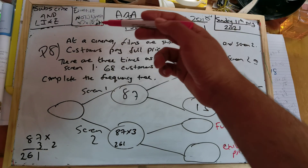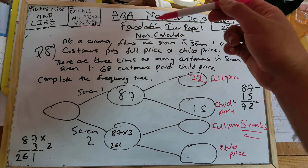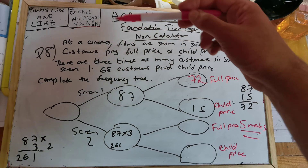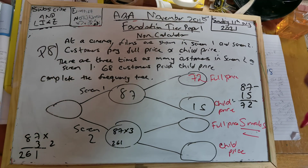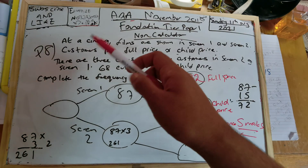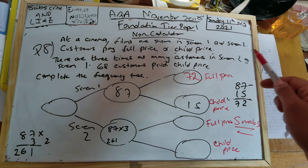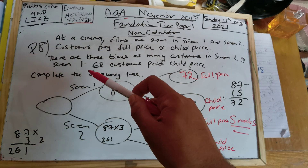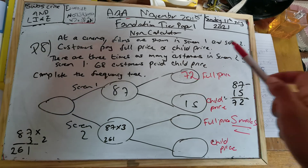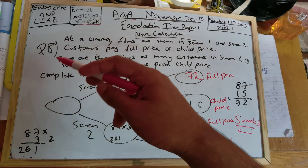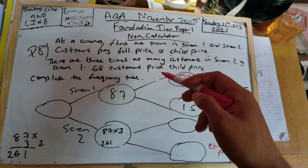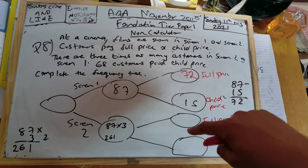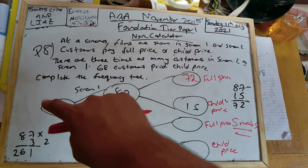Question number 8: at a cinema, films are shown in screen 1 and screen 2. Customers pay full price or child price. There are three times as many customers in screen 2 as there are in screen 1. 68 customers pay child price. Complete the frequency tree — it's a five mark question, with five boxes that aren't filled out.